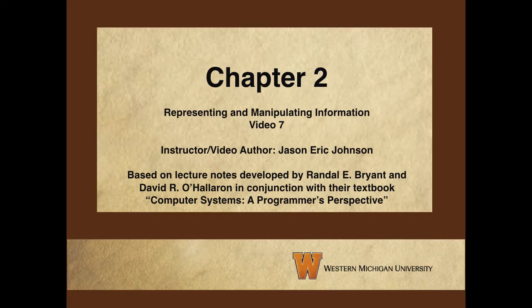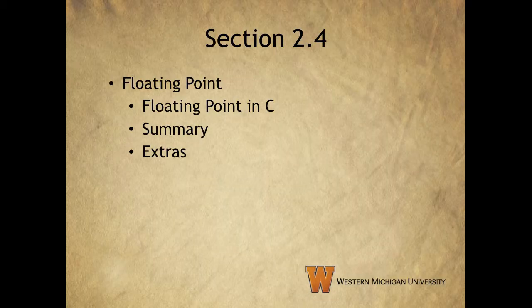Hello everybody and welcome to our very last video on chapter 2 of your computer systems text. We'll finish up section 4 of chapter 2 by mentioning some things about floating points in C, a small summary of what we need to keep in mind about working with floating points, and then we'll talk about a few extras. Specifically, we'll look at what the steps of encoding a floating point number — normalization, rounding, and post-normalization — look like in practice.